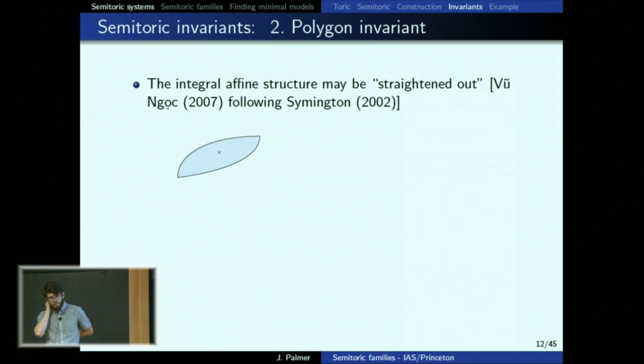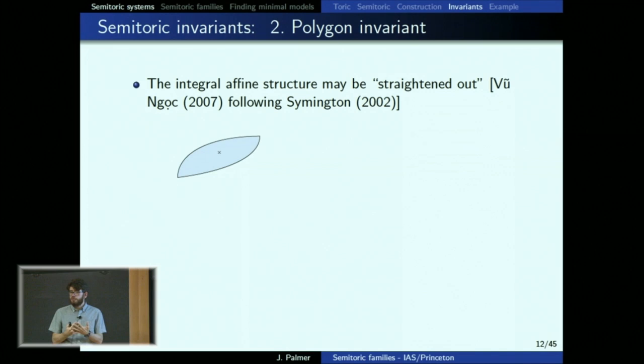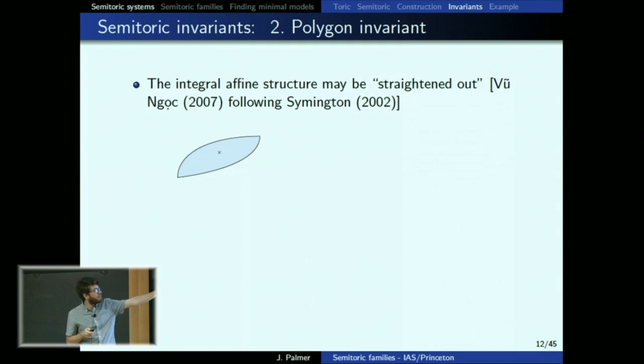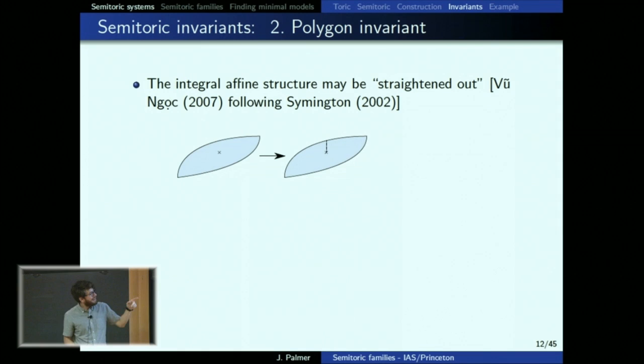This was solved by Vũ Ngọc in 2007, based on work of Symington from 2002. What you'd really like to do is straighten out the affine structure so it agrees with the affine structure of R^2. But you can't, because the affine structure only sits on the regular points, and a focus-focus point is a puncture in the middle with monodromy in the affine structure. The solution is to make the space simply connected by making a cut — you cut out this puncture of the image of the momentum map, and now you can embed it in an affine way into R^2 to get a polygon.